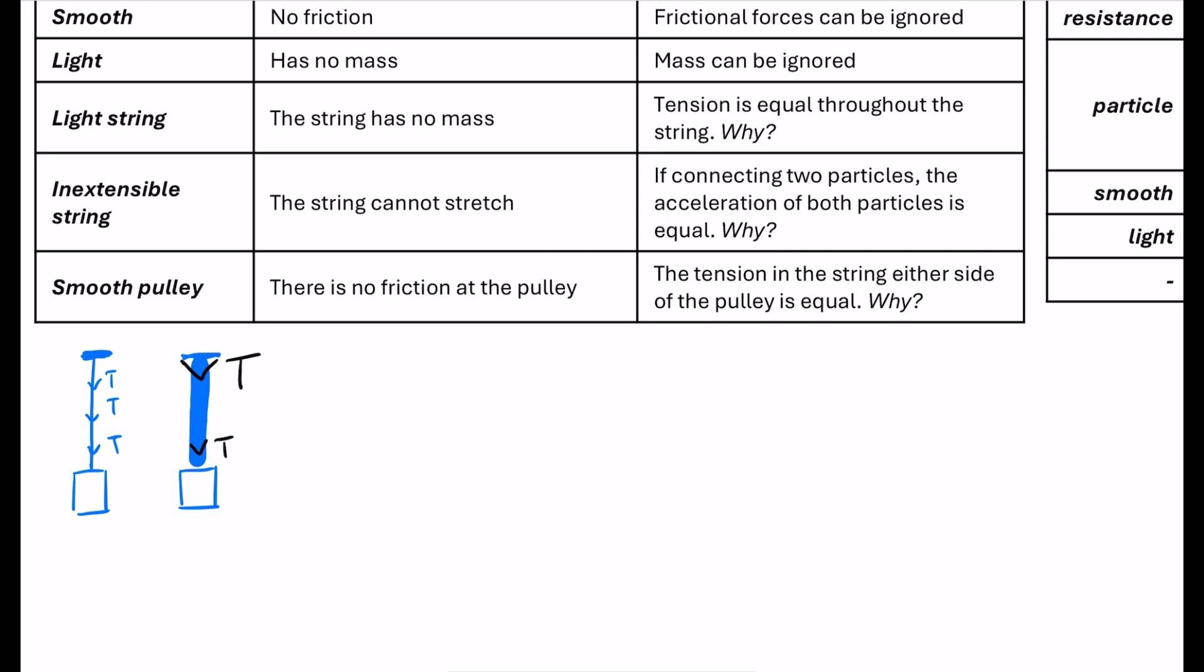Now, if we have something that is an inextensible string, people often write down the string cannot stretch. But where we've used this in our calculation is that if it's connecting two particles, the acceleration of both particles is equal. So if we imagine that we have got one particle here and another particle here, and they are being connected by an inextensible string, meaning it cannot stretch. If this particle was going to move, well, the whole thing will have to move. If I'm dragging the one that's on the right hand side, if that one's moving, the one on the left is certainly going to be moving because this cannot stretch. If it could stretch, then in theory, we could drag this one along and the string would just keep stretching and the other one could stay in its place that we've got there.